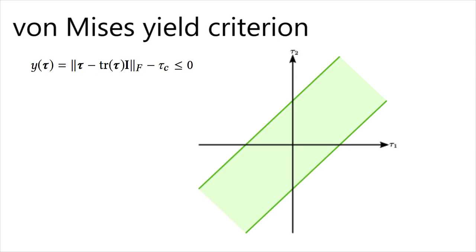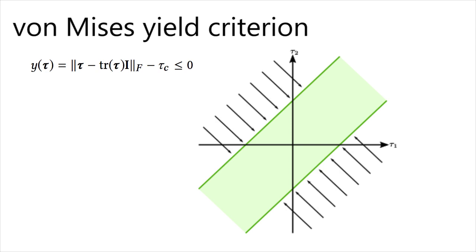Our method is versatile and can work with a wide range of different constitutive models. In particular, we can use von Mises to model mode 2 and mode 3 fracture, which Rankine could fail to properly capture. This graph shows the return mapping for von Mises.